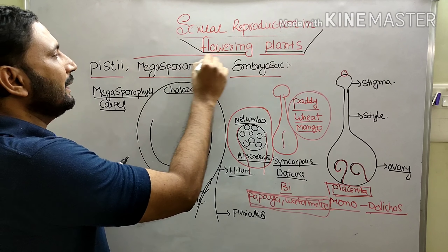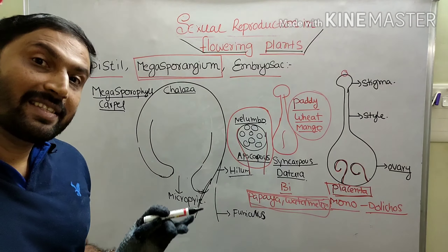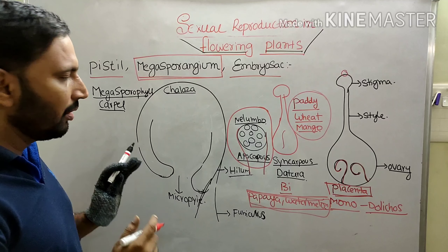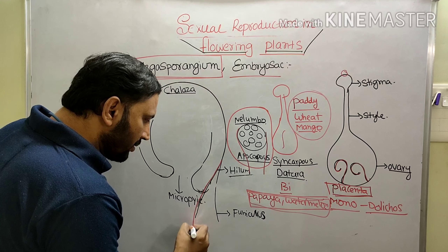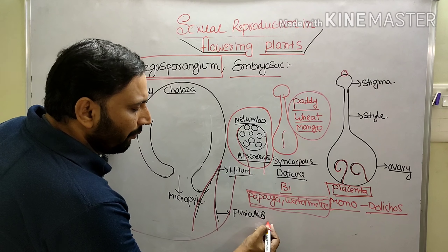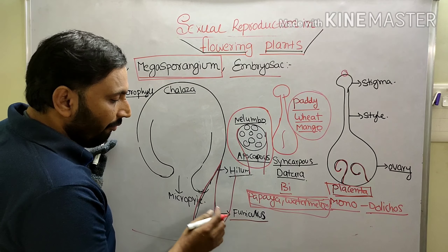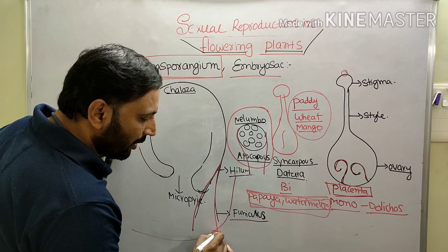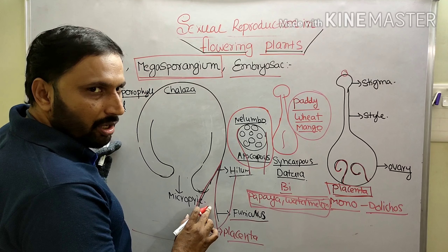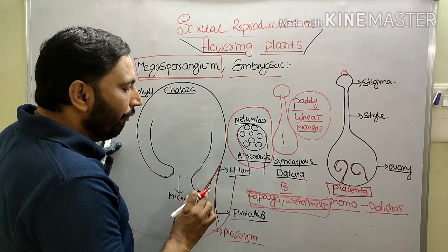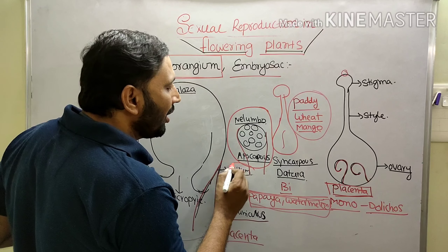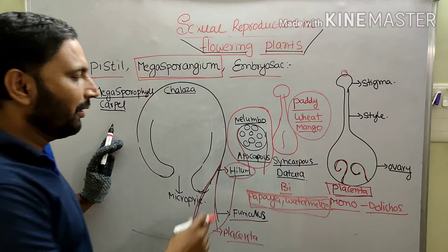The ovule is the megasporangium. The stalk part of the ovule is called Funiculus. The region where the ovule is attached to the ovary wall is called Placenta. The region where the funiculus is attached to the body of the ovule is called Hilum.